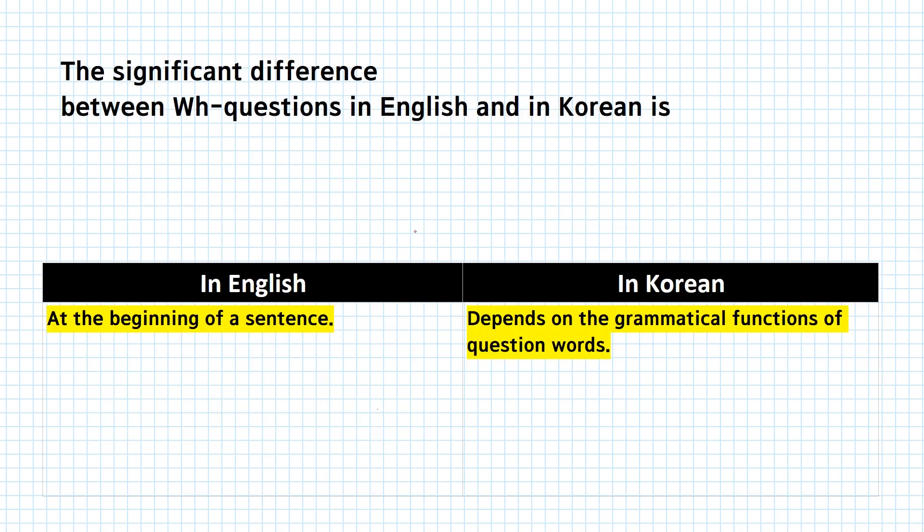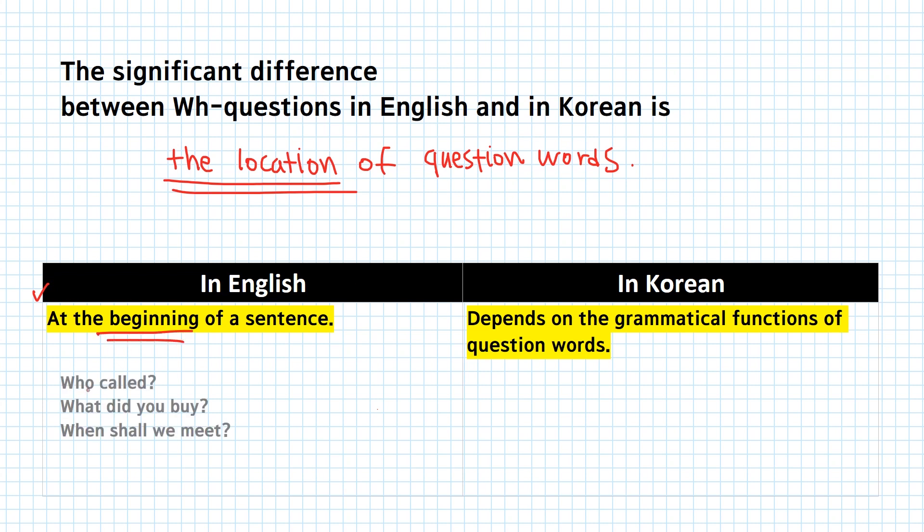First things first, how to make WH questions in Korean. The big difference between WH questions in English and in Korean is the location of question words. In English, question words are placed at the beginning of the sentences. For example, who called? What did you buy? When shall we meet? But in Korean, it depends on the grammatical functions of question words. You know that the word order in Korean is subject first, then object, and the verb at the end, right?